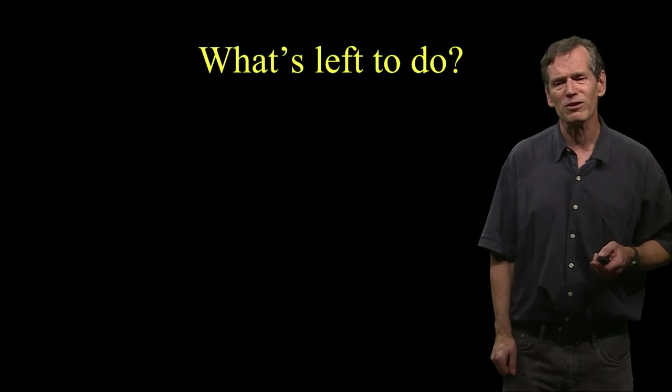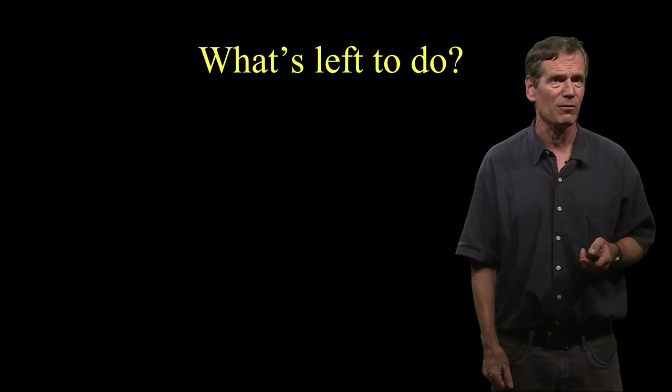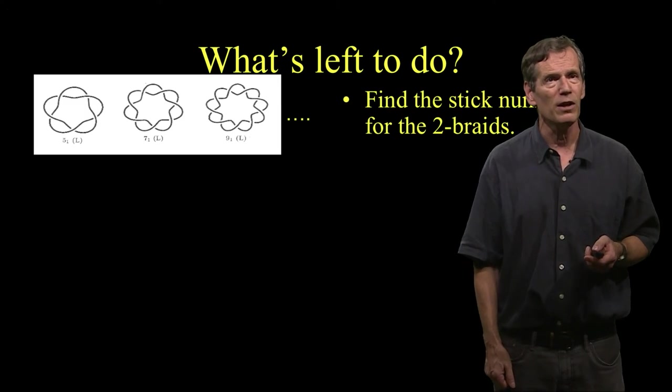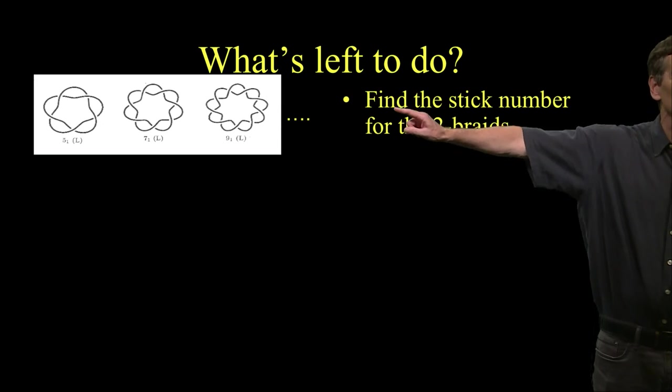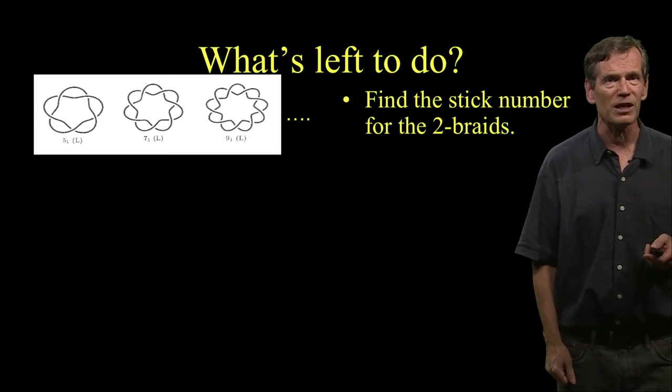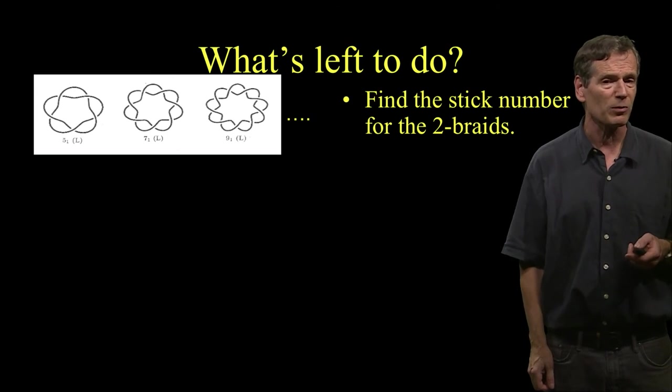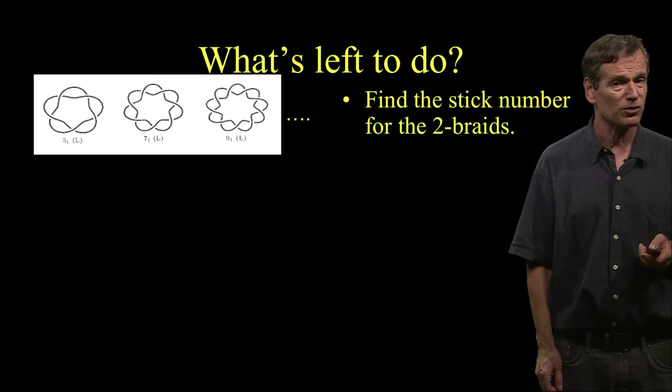So what's left to do? What are the things that people would like to know about how many sticks it takes to make a knot? Well, here's some examples. Number one, find the number for the two braids. So these knots that you see over here, these are called the two braids. They're just a sequence of two strands that are wrapped around each other. And surprisingly enough, we don't know the stick number for this sequence of knots. You'd think we'd know that. It's a very simple sequence of knots, but that's still open.